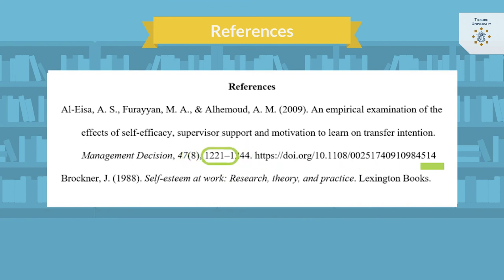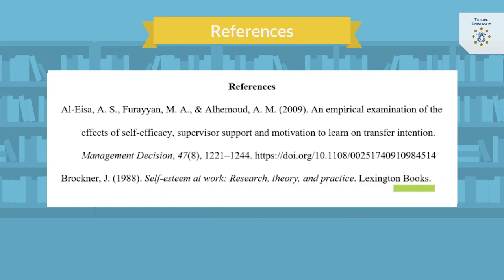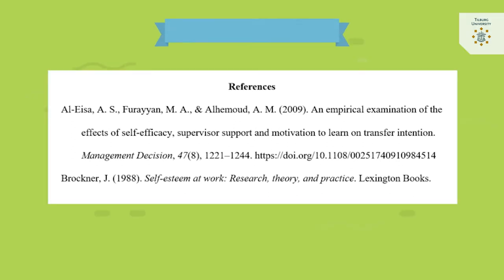The way you cite a book is slightly different. Now the title is in italics and after the title comes the publisher. The sixth edition of APA previously required you to include the city and state where the publisher was located, but this is no longer the case. Books do not always have a DOI, but if they have one, you include the DOI in the reference after the publisher name.